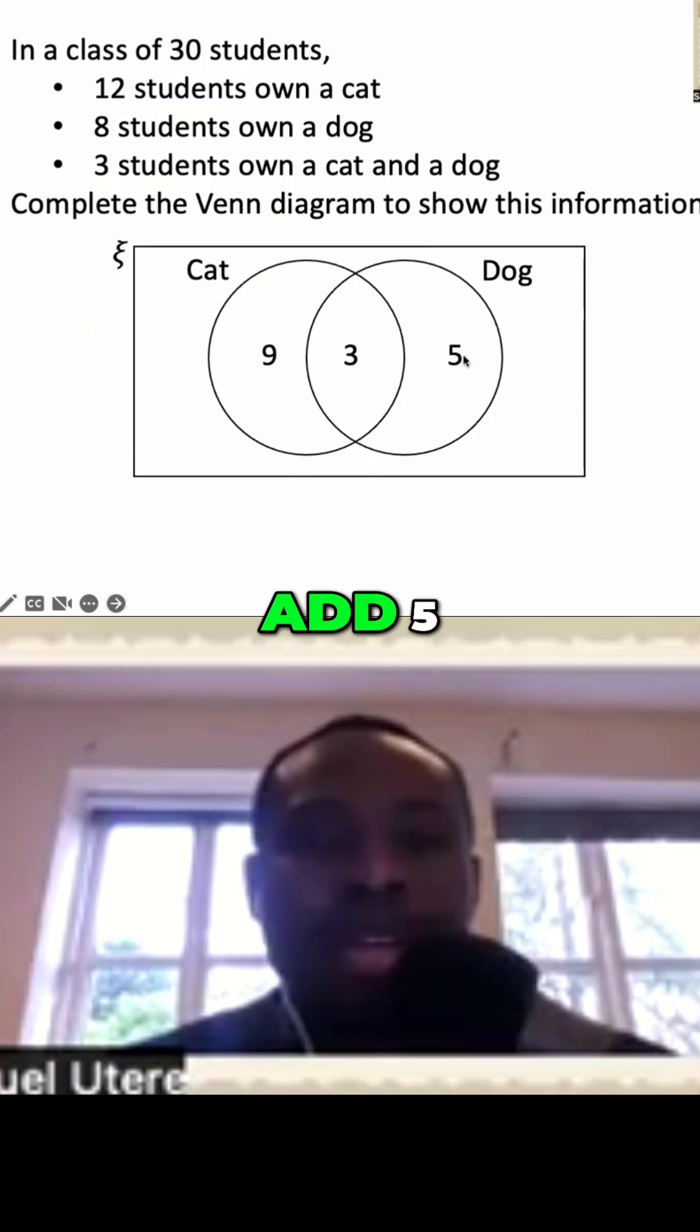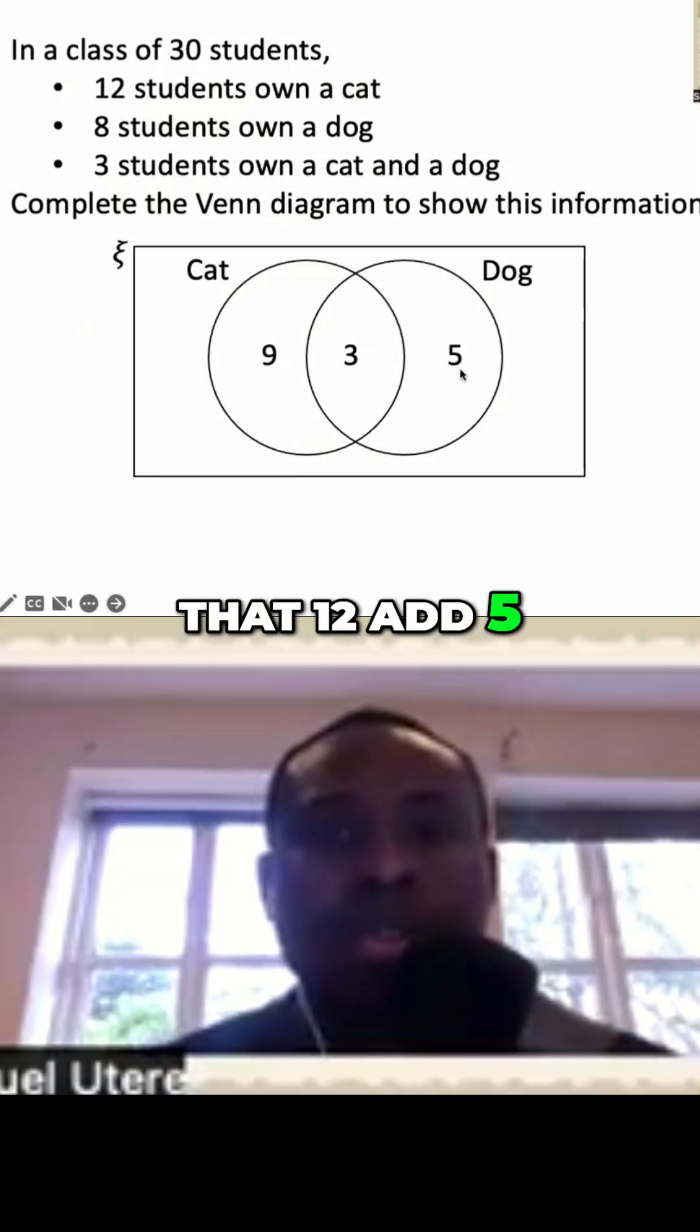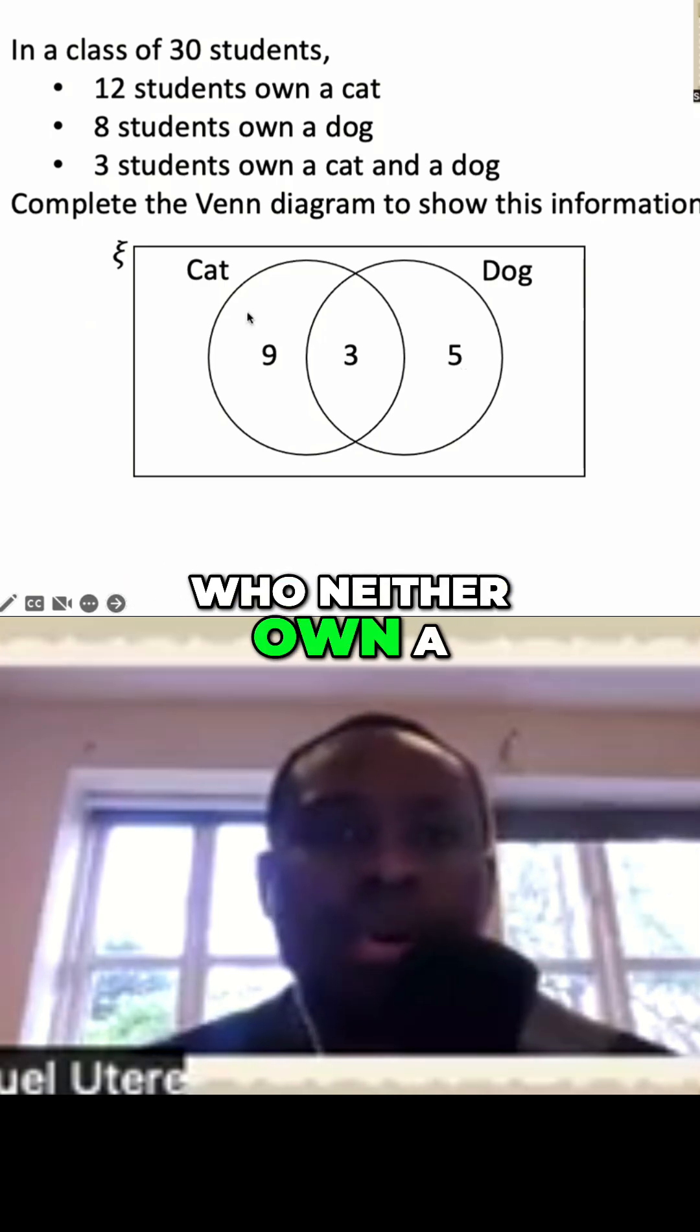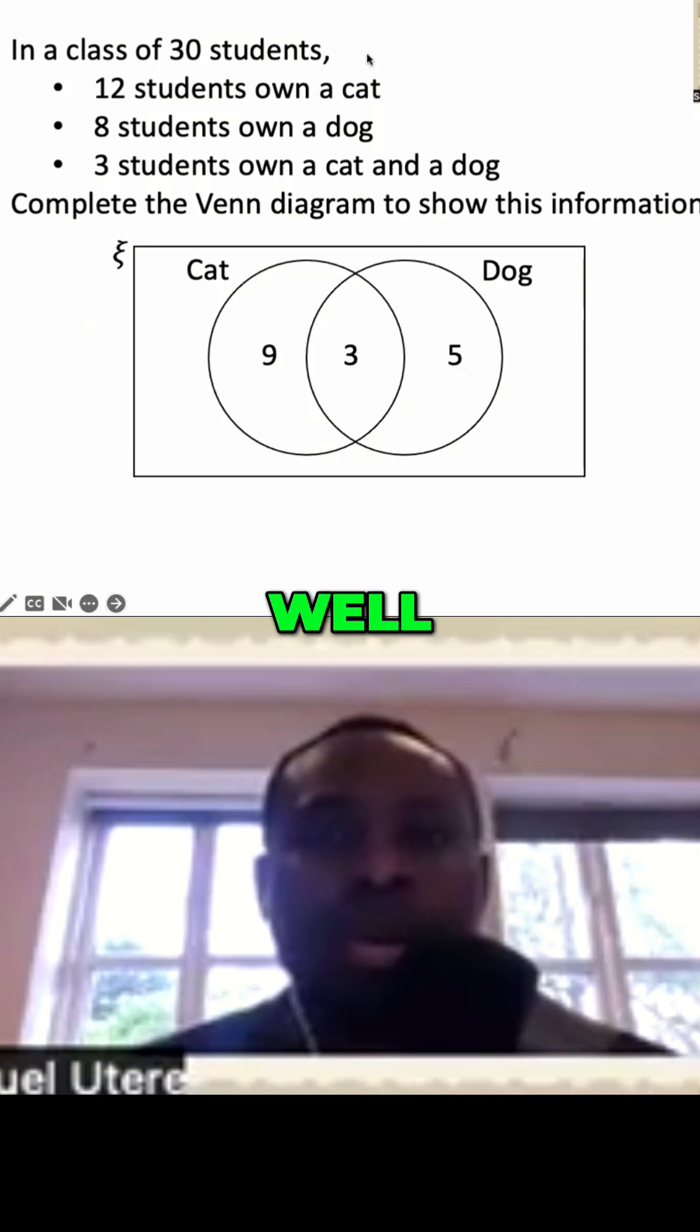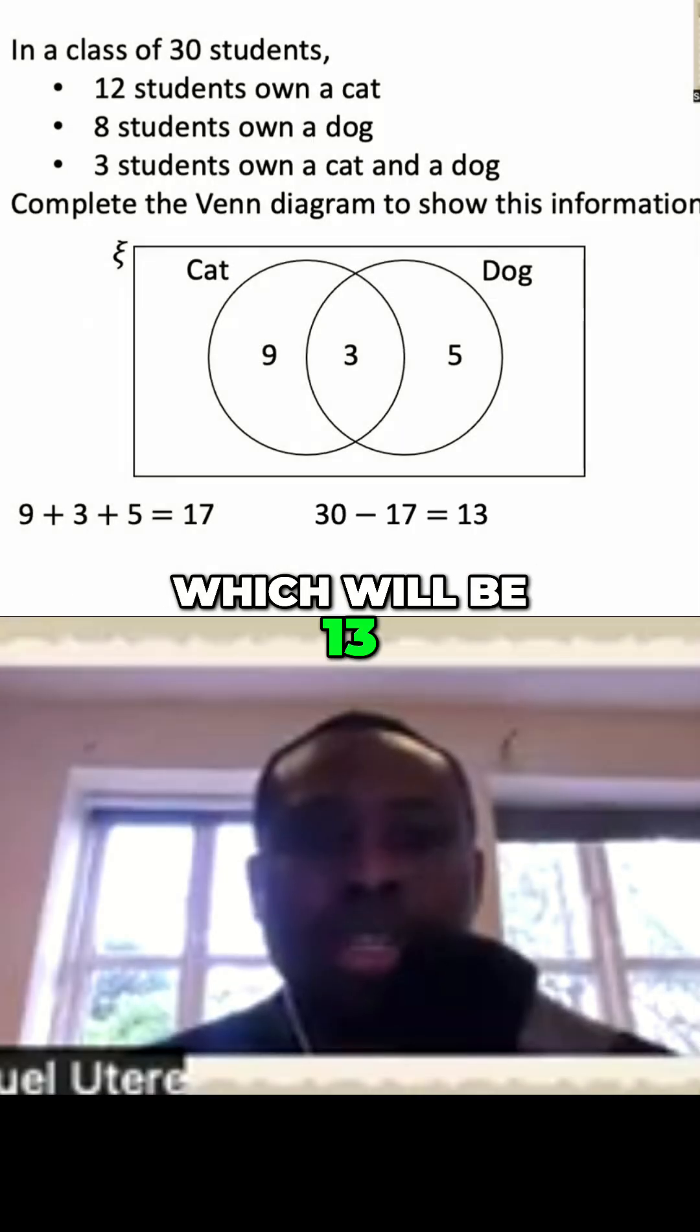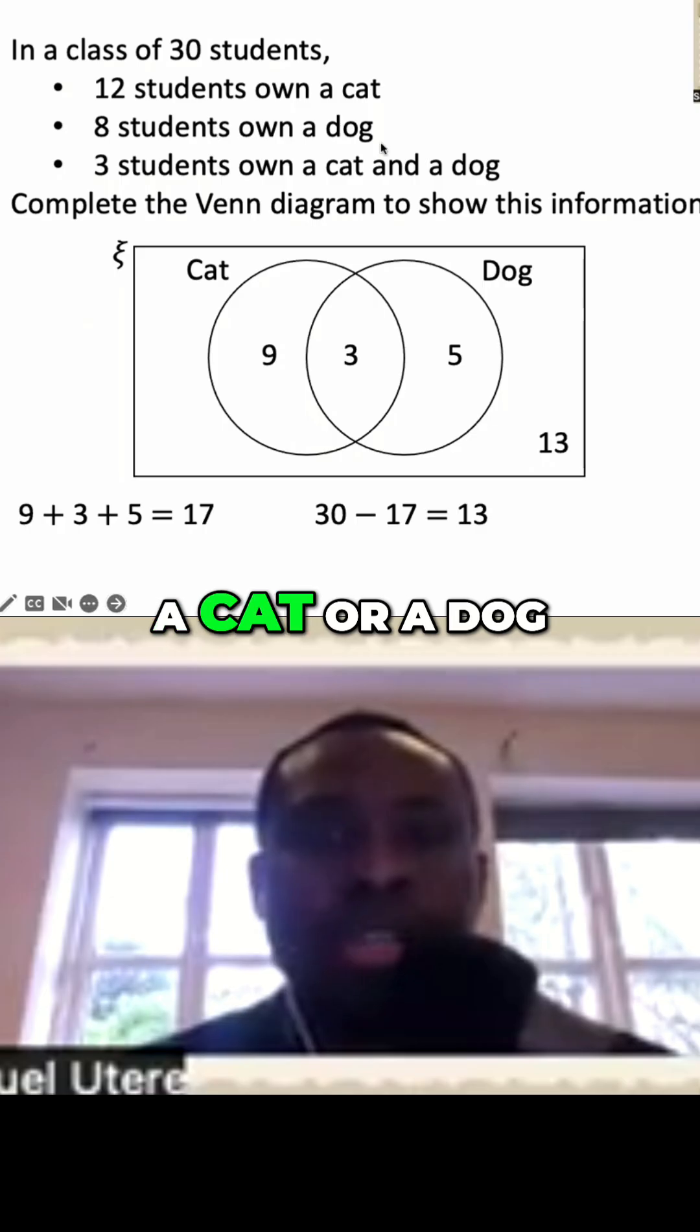We know we have nine and three and five. So nine and three is 12 and we also know that 12 and five is 17. So what about those who need to own a cat or a dog? Well, we'll have to subtract this total from 30, which will be 13. So there are 13 students who need to own a cat or a dog.